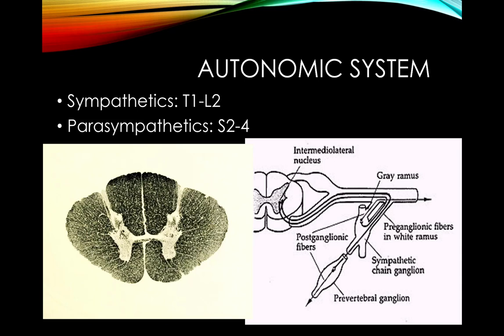A brief note on the autonomic system: unlike somatic motor neurons where there is no ganglion between the anterior horn cell and the muscle, the sympathetic system has preganglionic ganglia and sympathetic chain ganglia in between. The sympathetics come from the intermediolateral cell column, mainly in the thoracic cord extending to L1-L2. Parasympathetics come from the sacral cord. This distinction between thoracic sympathetics and sacral parasympathetics is important when discussing bladder control.